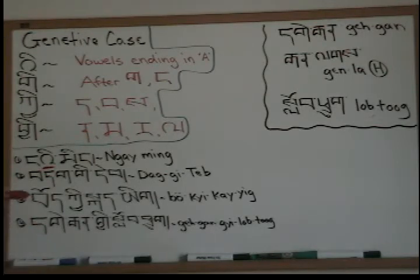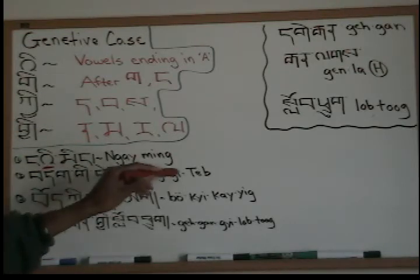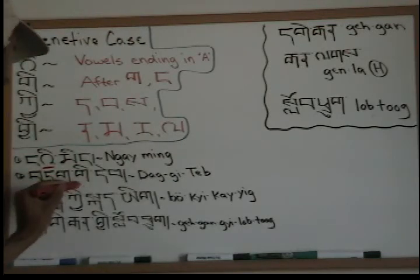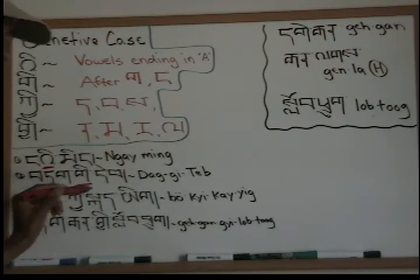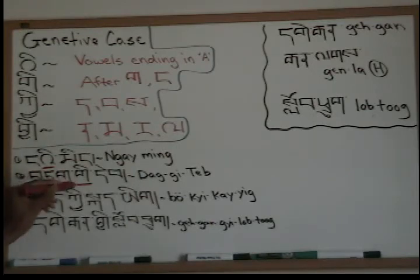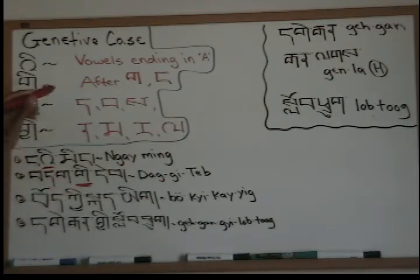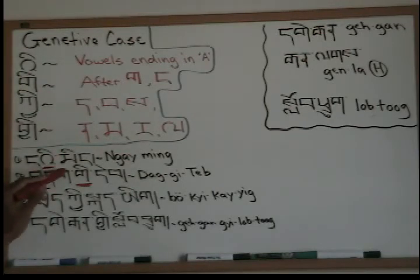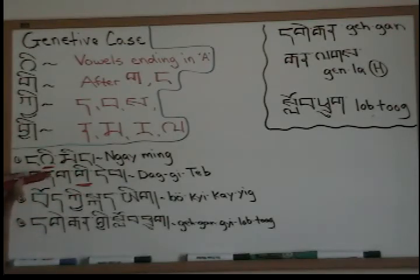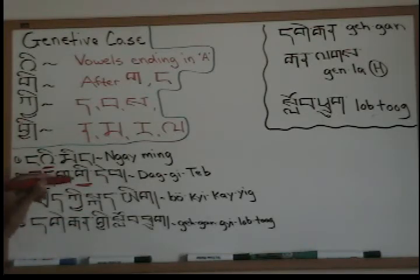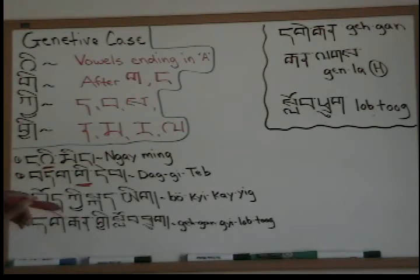Next example: dak-ki-teb. Here's the genitive marker. What did we say our rule was? After a ga or ngah — as you can see, dak ends with the ga, so it will take the ki. Dak is a classical way of saying 'I,' and teb is 'book,' so dak-ki-teb means 'my book.'